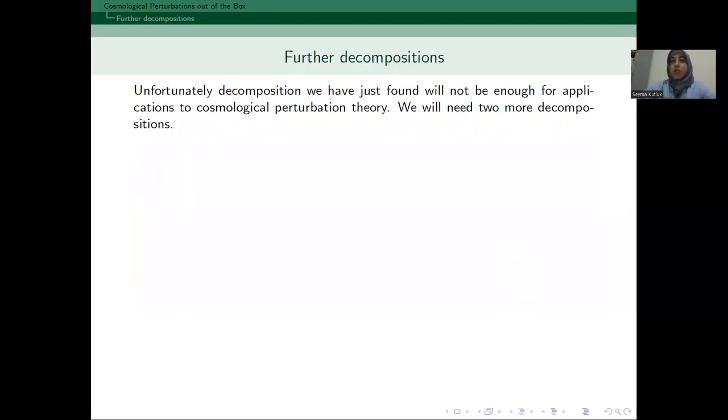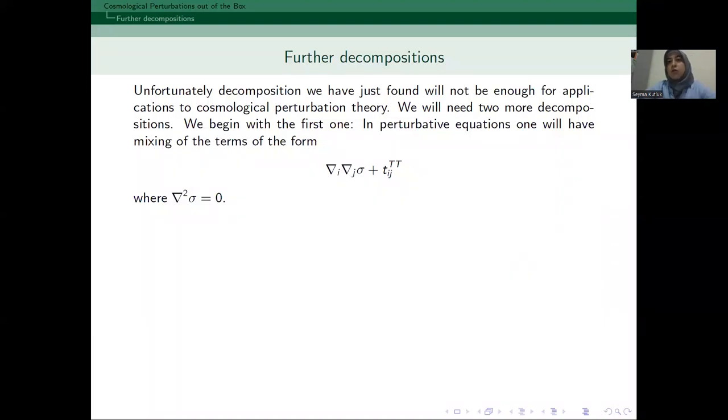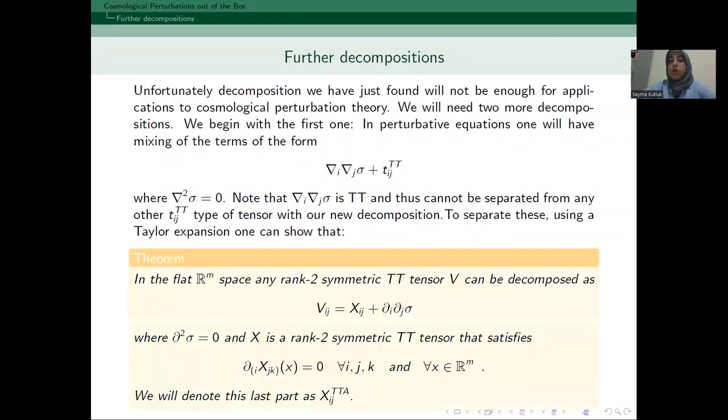Now, unfortunately, this decomposition will not be enough for cosmological perturbation theory. We need two more things. First, in the equations, we will get expressions like this: two derivatives of a harmonic scalar and a TT part. But this expression of sigma is itself a TT part. So, with the given decomposition, we cannot separate these two parts. So, we need a further decomposition. And for this, I propose the following theorem. So, given a TT tensor, I can divide it into two: one with the two derivatives of a harmonic part and another part, which is TT, but also satisfies this—its symmetrized first derivative is zero. And this part I denoted as TTA.